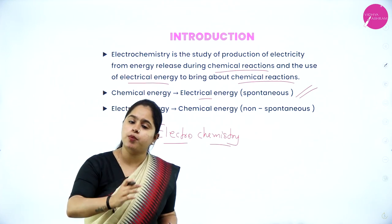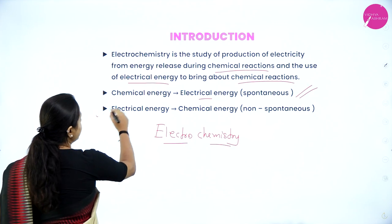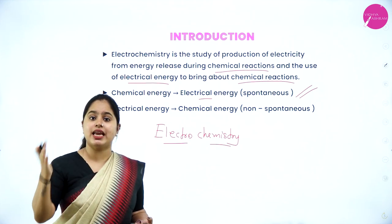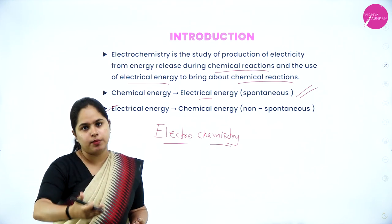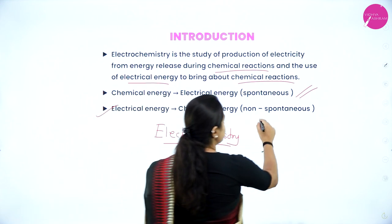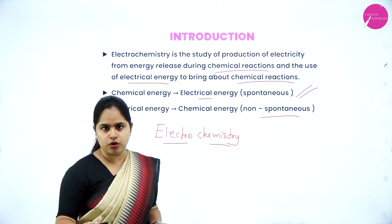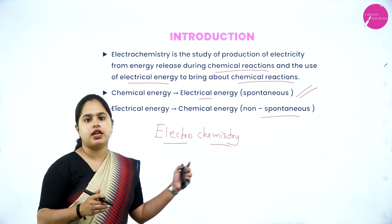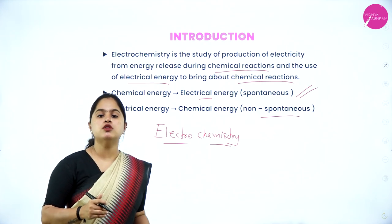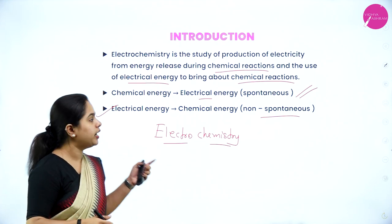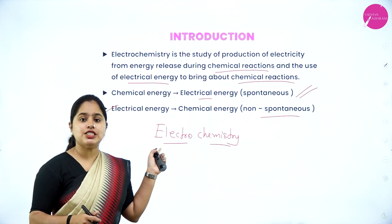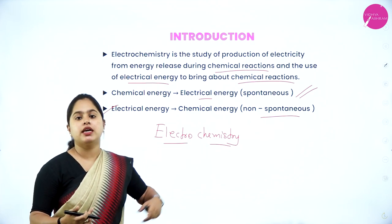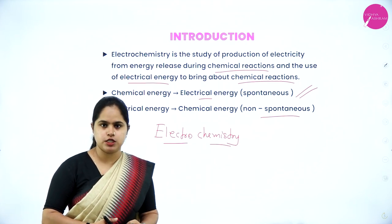Electrical energy to chemical energy is a non-spontaneous process. Here, electricity is provided externally so that chemical reactions take place. Such processes do not happen on their own. So overall, we study how chemical energy is converted into electrical energy (spontaneous) and how electrical energy is converted into chemical energy (non-spontaneous).